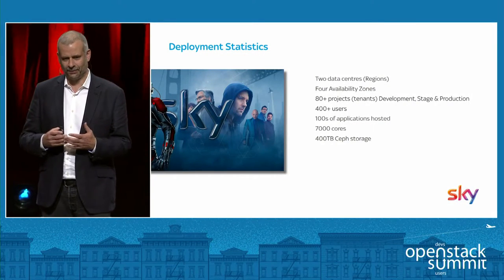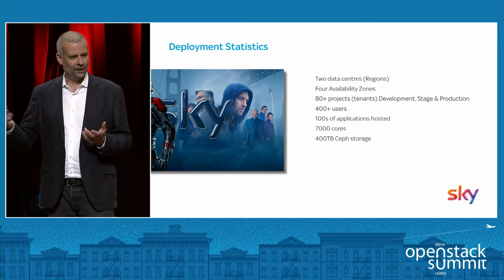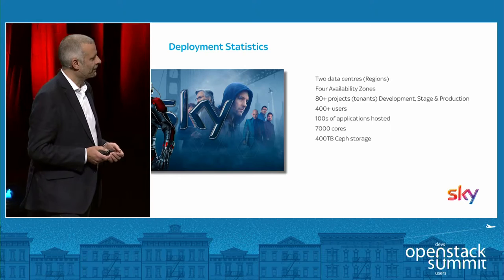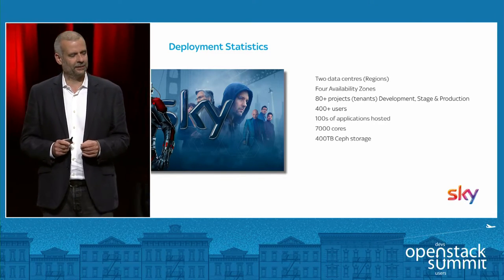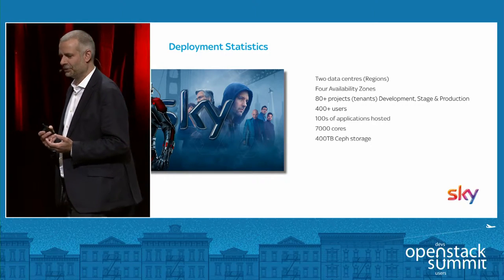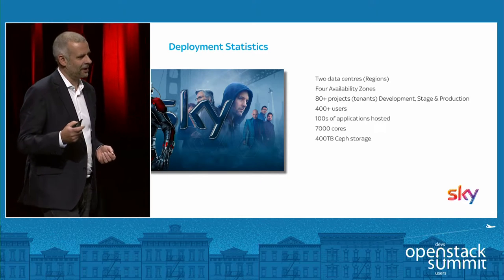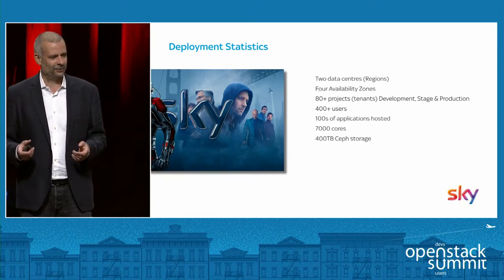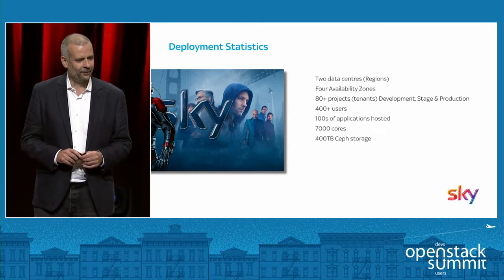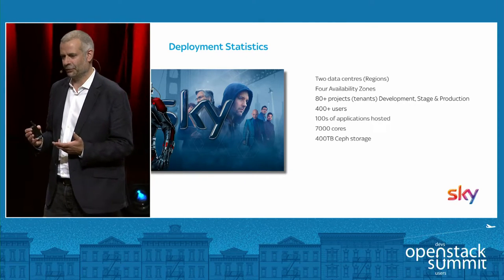At Sky we've got many data centers, and we've deployed OpenStack in two of our main data centers that provide both corporate and internet presence with four availability zones, so applications can be deployed across many availability zones and we can mitigate during updates or upgrades by spreading applications across data centers and availability zones. There are something like over 80 projects or OpenStack tenants on the platform, using it for development, stage and production apps. Every day there are 400-plus users on the platform creating networks, routers, subnets, ports, instances, volumes and connecting it all together with Heat. From a data center footprint perspective, we've got something like 7,000 cores and 400 terabytes of Ceph storage presented up through Cinder.